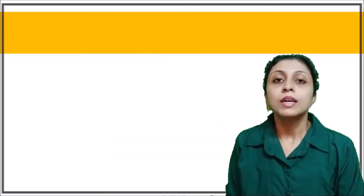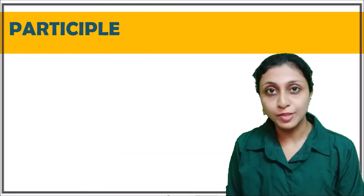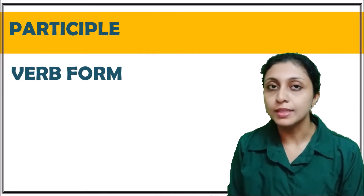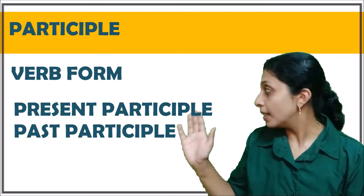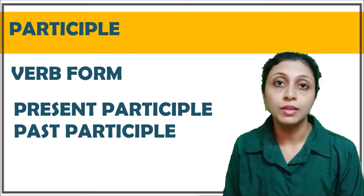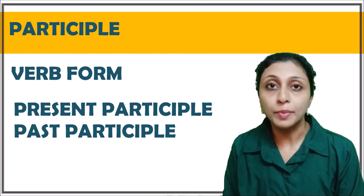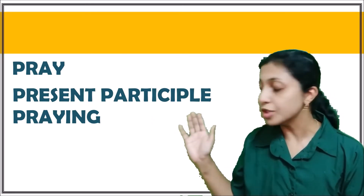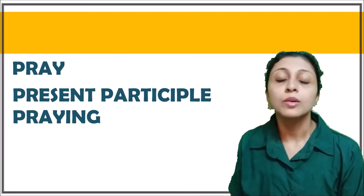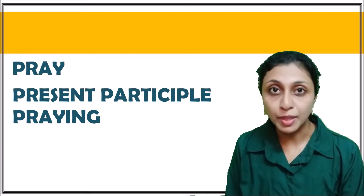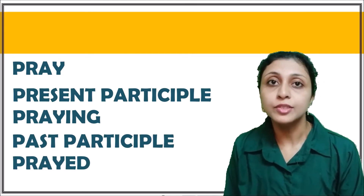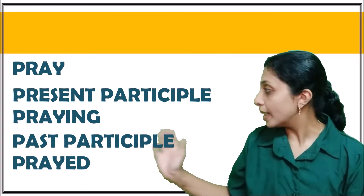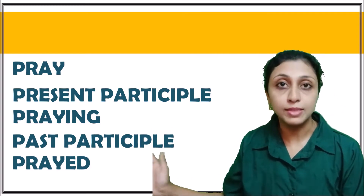A participle generally refers to a verb form. Participles can be of two types: the present participle and the past participle. If you take the verb 'pray', the present participle is formed by adding '-ing', so it would be 'praying'. For the past participle, if it is a regular verb, you add '-ed' to the base of the verb, giving you 'prayed'.